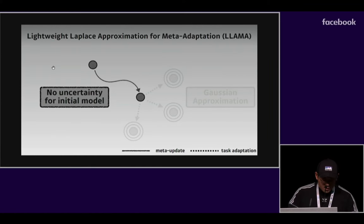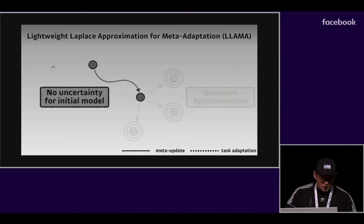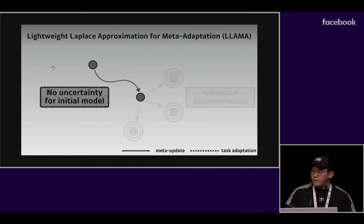Second, it only captures the uncertainty during task adaptation, but not during meta-update, so it can still suffer from overfitting.